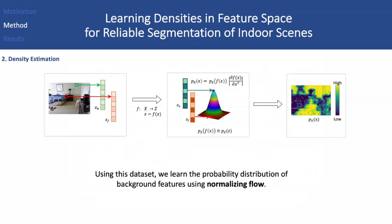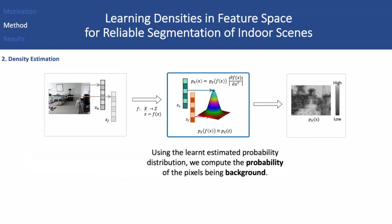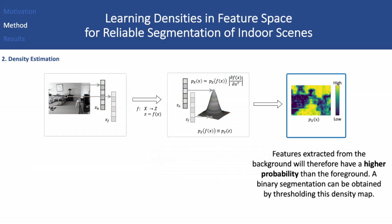We keep features only influenced by background to create a dataset of background features. Using this dataset, we learn the probability distribution of background features using normalizing flow. Given an input image, we extract high-dimensional features for each pixel. Using the learned estimated probability distribution, we compute the probability of the pixels being background. Features extracted from the background will therefore have a higher probability than the foreground. A binary segmentation can be obtained by thresholding this density map.